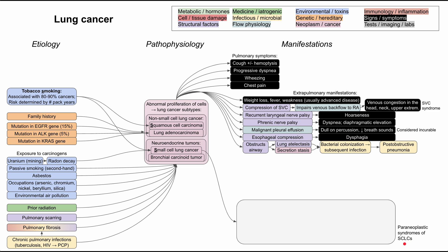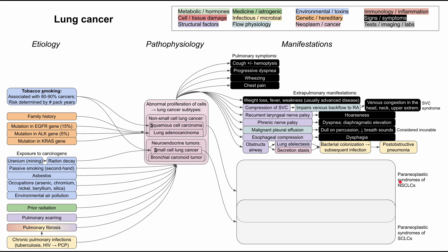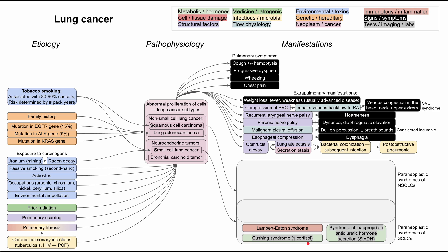There are also paraneoplastic syndromes worth knowing. The paraneoplastic syndromes of small cell lung cancer include Lambert-Eaton syndrome, Cushing syndrome — first diagnosed by very high cortisol or manifestations of high steroid levels — and syndrome of inappropriate antidiuretic hormone secretion, or SIADH.